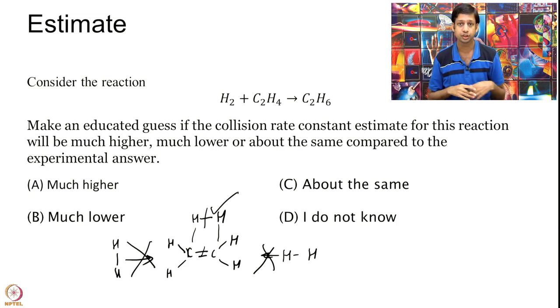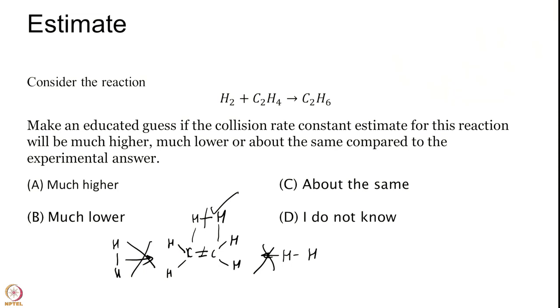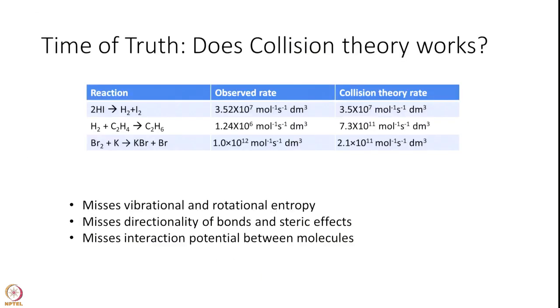Therefore, collision theory will grossly overestimate the rate of the reaction. The correct answer will be the collision theory answer is much higher than the experimental answer. Is that what you got?